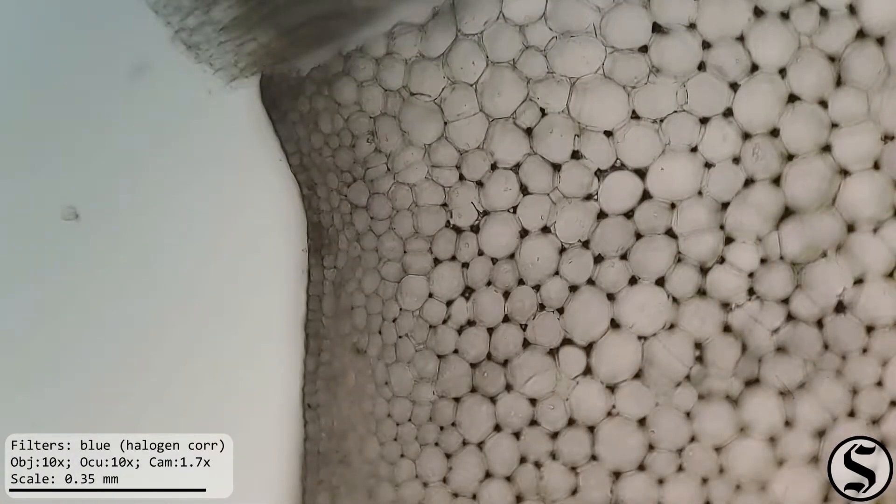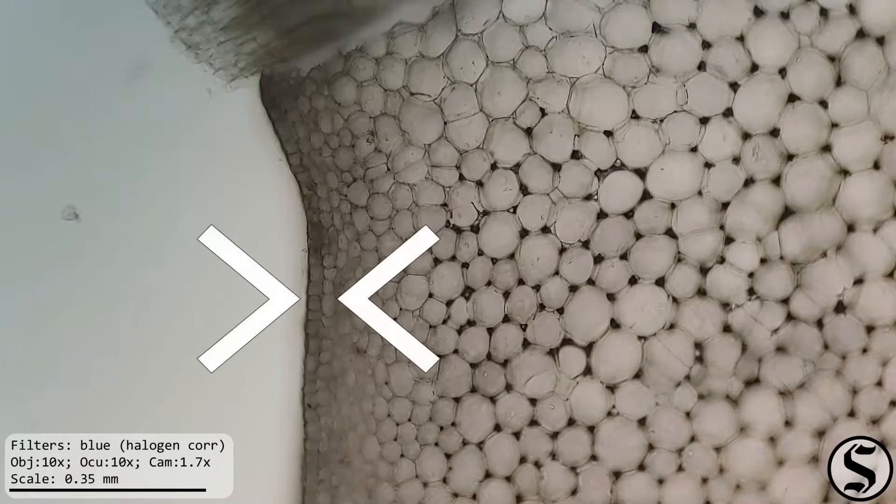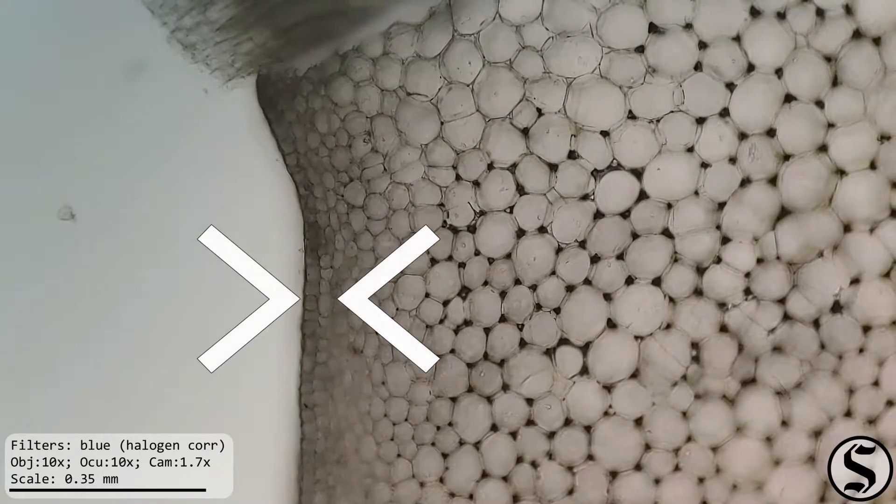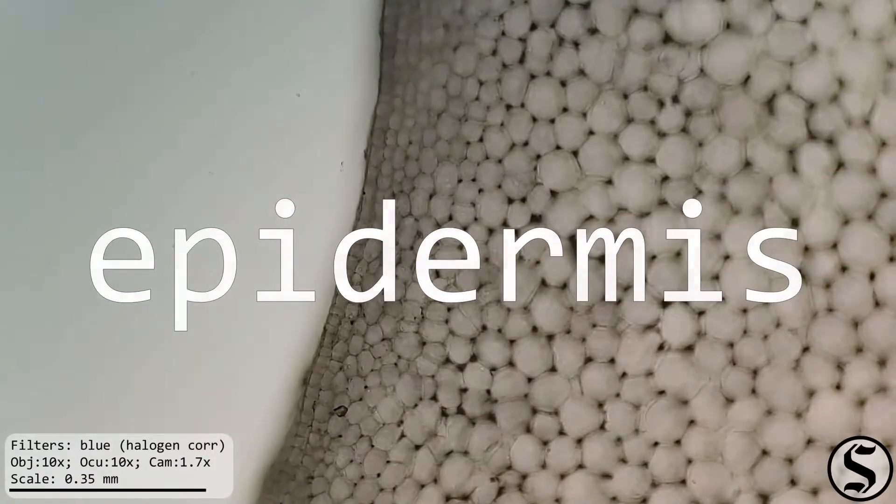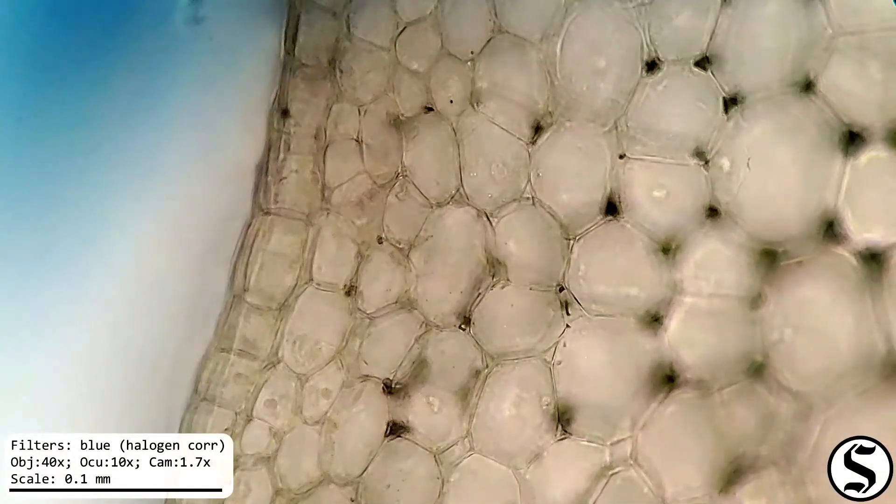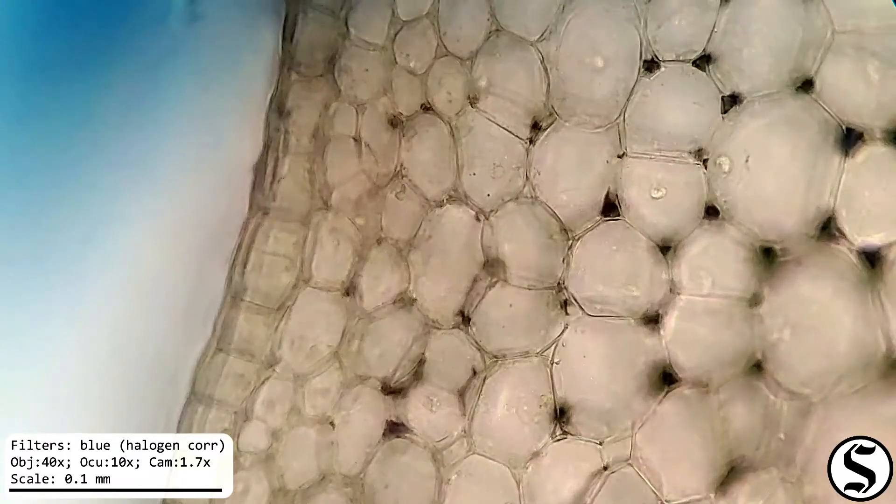Under slightly higher magnification we can see that there's a very distinct row of cells on the outside and that is the epidermis. That's Greek for epi on top of and derma skin because it's the outer skin layer.